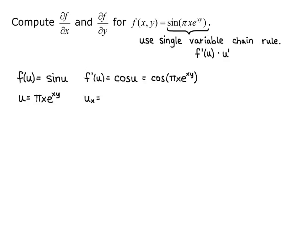The inside function involves both x and y, so we'll have to do partial derivatives. First we find u sub x, the partial derivative of u with respect to x — that is the partial derivative with respect to x of pi x e to the xy. Here we have pi x times e to the xy, so it's a product of two x functions, and we need to use the product rule: f prime g plus f g prime, where f is the first factor and g is the second factor.